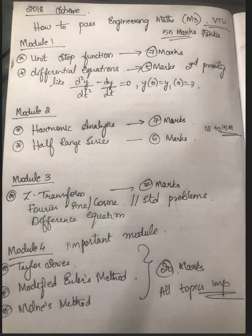Module 2 has two very important topics to keep in mind: harmonic analysis, which is a sure question for 7 marks, and half range series with standard problems. From this, you can fetch around 12 to 15 marks.